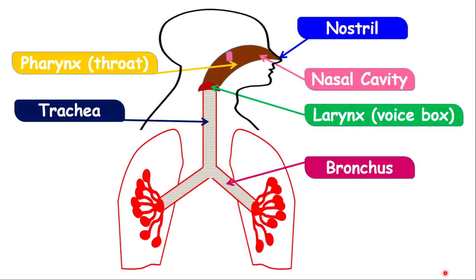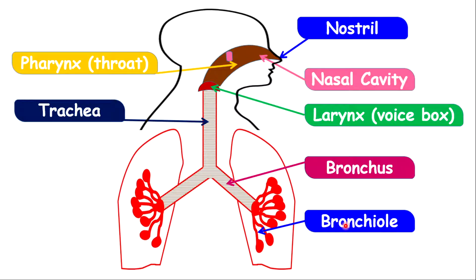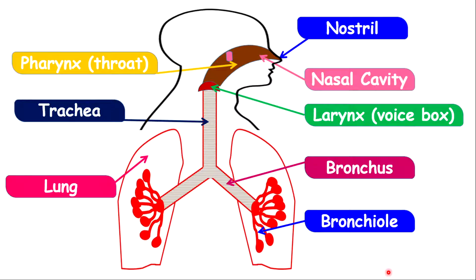We also have what's called the bronchus — the plural form being bronchi. At the end of the bronchus we have bronchioles — the plural form being bronchioles. We have the lungs, and at the end of the bronchioles we have the alveolus — the plural form being alveoli.